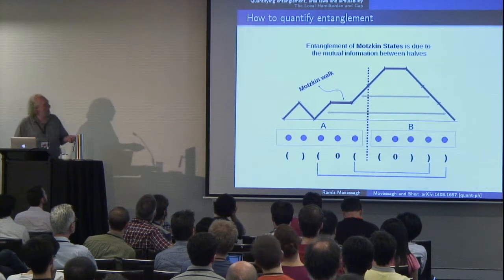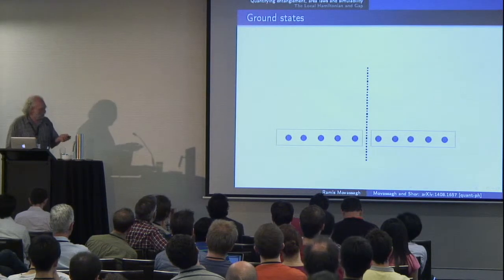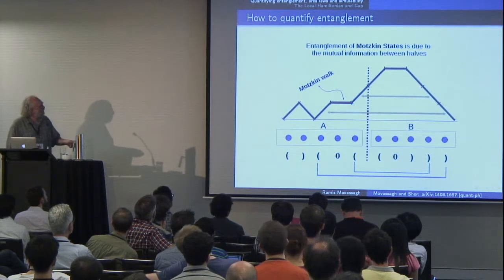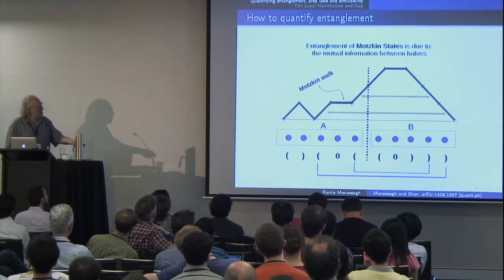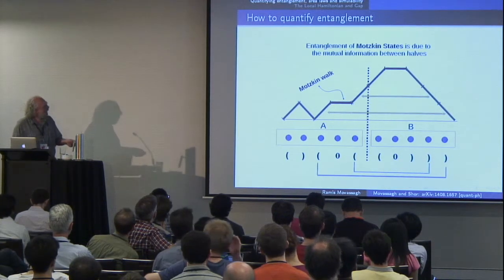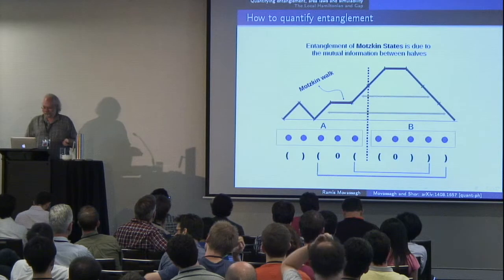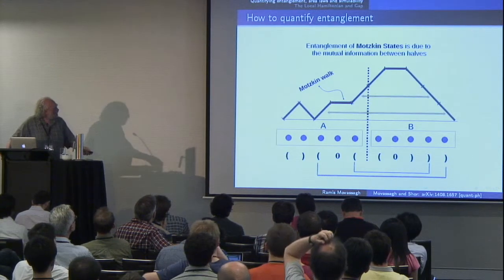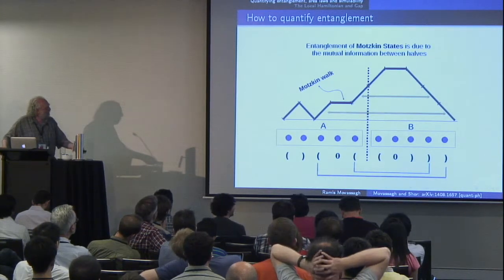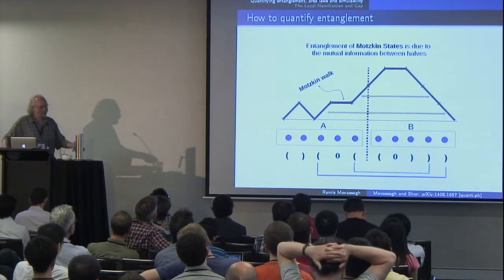A Motzkin walk is a walk on a length 2n chain which starts at 0, ends at 0, always stays above the x-axis, and the steps are either up, down, or horizontal. You can turn these into sequences of L, R, 0: up is left, down is right, and horizontal is 0.